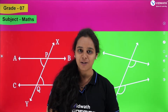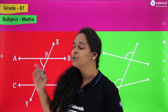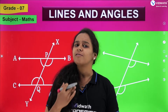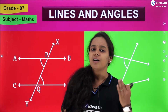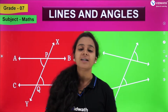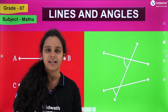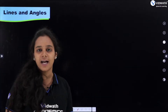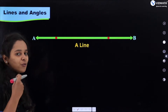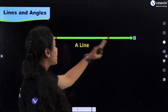Hello students, welcome to Vidwath Academics. I'm your math tutor Sweta. Today we are here with a new concept: lines and angles from Grade 7. A line is made up of several points — a collection of points. Here, AB is a line which can be extended in both directions and does not have a definite length.